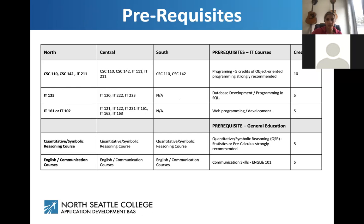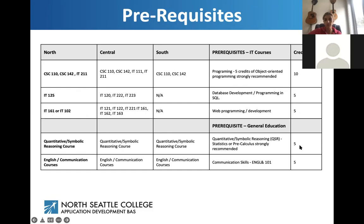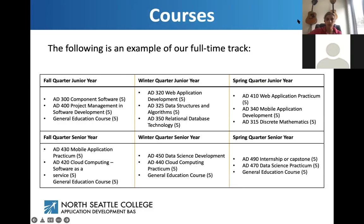To get into this program you need 10 credits of programming — CSC 110, CSC 142, and IT 211 at North, with equivalent courses at Central and South. You need 5 credits of database development (IT 125 at North), 5 credits of web programming/development (IT 161 or IT 102), 5 credits of quantitative/symbolic reasoning — we recommend statistics or pre-calculus — and 5 credits of English 101. This is in addition to your associate's degree or 90-plus college credits.